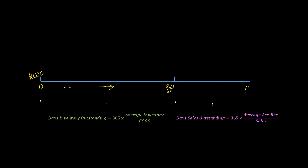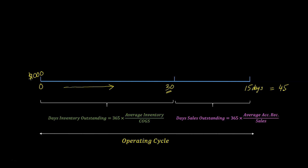Suppose your customers take another 15 days on average to pay you, measured as days sales outstanding or days sales in receivables. This means it takes a total of 45 days from when you paid $1,000 to your suppliers to when you actually receive money. In finance, this total time — 45 days — is known as your operating cycle. Your operating cycle is simply the sum of your days inventory outstanding and days sales outstanding.